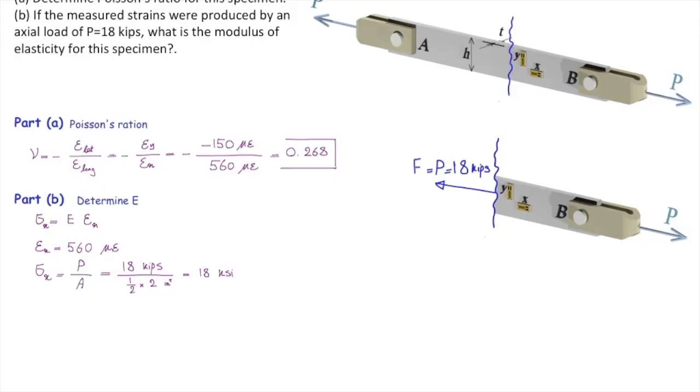Now by having stress and strain, we can determine how much is the modulus of elasticity. Modulus of elasticity is sigma x over epsilon x. Sigma x is 18 ksi, epsilon x is 560 micro epsilon.